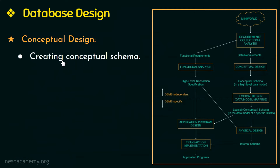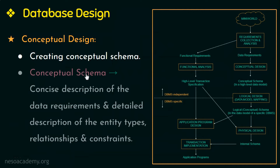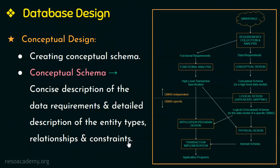A conceptual schema is a concise description of the data requirements and a detailed description of the entity types, relationships, and constraints. These concepts are expressed using a high-level or conceptual data model, and because they do not contain implementation details, they are easier to understand and can be communicated easily with non-technical users.